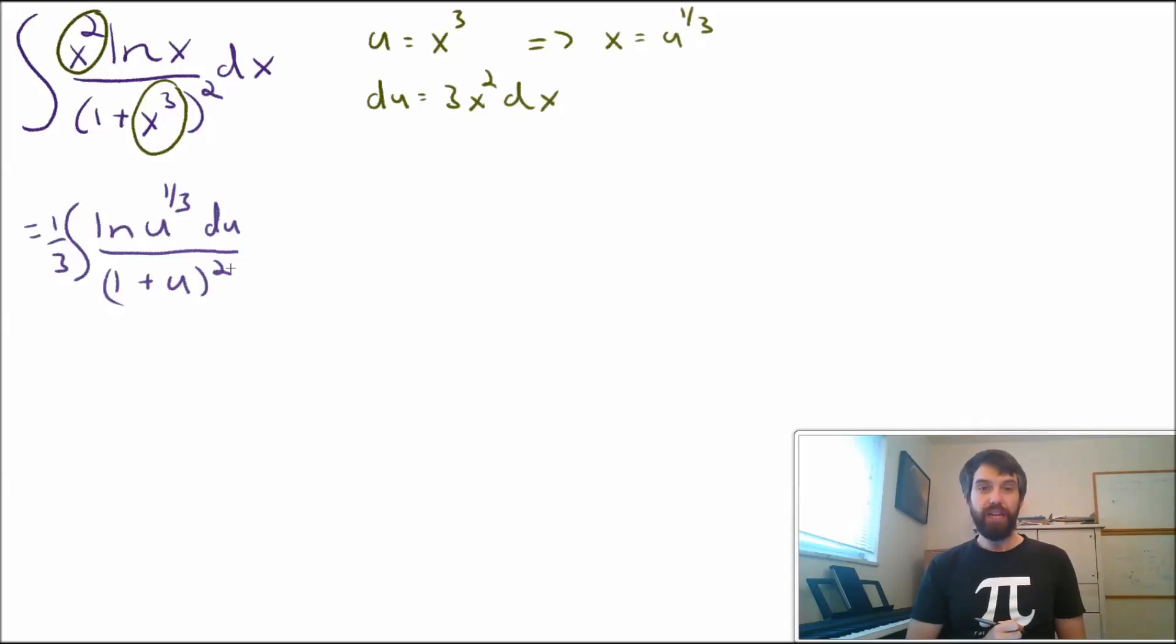This is getting a little bit better. I'll do one other just little piece of algebra here, which is to note that if I have some log rules, I've got this u to the 1 third. The 1 third can come out the front because ln of x to the a is equal to a ln of x. So this is going to be a ninth out the front, the integral of ln of u divided by 1 plus u squared du.